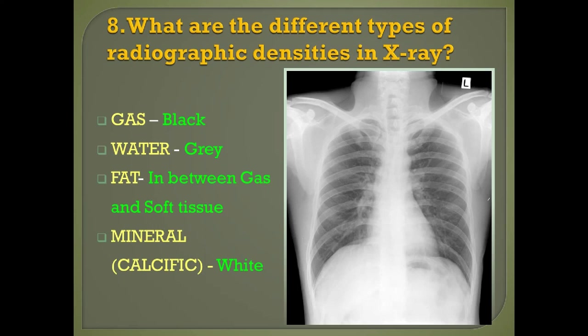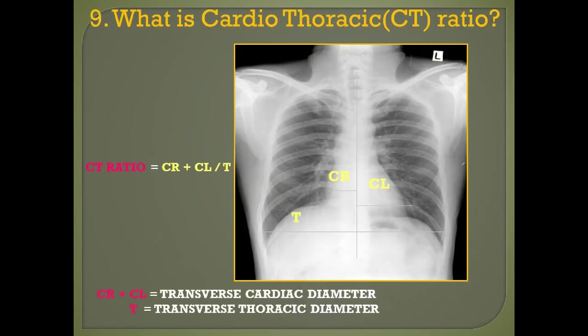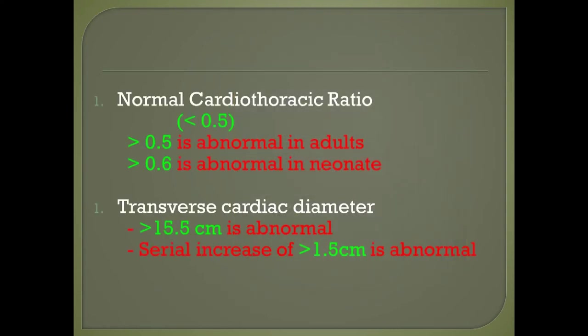Question number nine: what is the cardiothoracic ratio? The cardiothoracic ratio is measured on a PA chest X-ray and is the ratio of the maximal horizontal cardiac diameter to the maximal horizontal thoracic diameter. The CT ratio equals CR plus CL divided by T, where CR plus CL is the transverse cardiac diameter and T is the transverse thoracic diameter. The normal cardiothoracic ratio should be less than 0.5. If greater than 0.5 it is abnormal in adults; if greater than 0.6 it is abnormal in neonates.